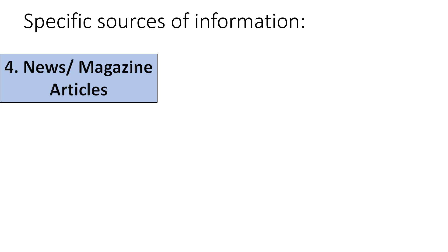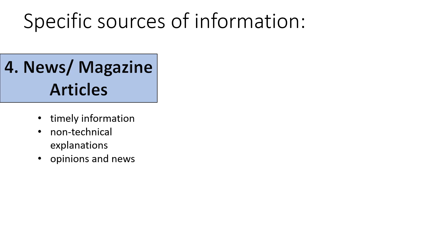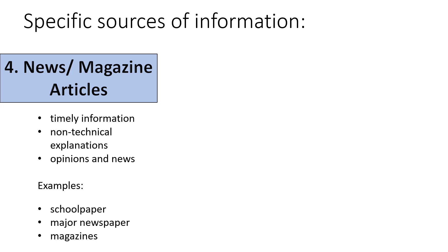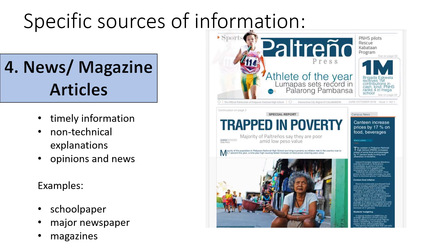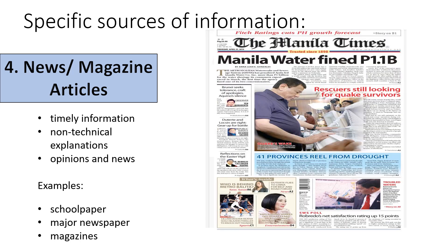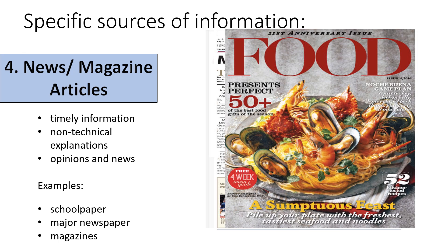Another way to get information is through newspapers and magazines. News and magazine articles provide timely information, non-technical explanations, and opinions and news. Examples are school papers, major newspapers, and magazines. You can use these to get the information you need for your essay or article.